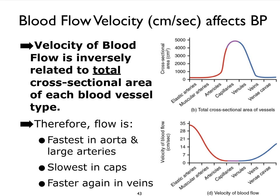Let's take a look at the graphs on the right-hand side. What we see in the top graph is the total cross-sectional area of vessels. We're adding up the lumen cross-sectional areas — slice a vessel and measure the whole surface area of that lumen — and add up all the surface areas of all the elastic arteries, the muscular arteries, the capillaries, all the way down to the vena cavae. Of all the different vessel types, it is the capillaries that have the highest cross-sectional area.